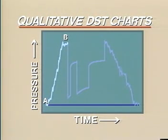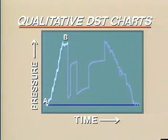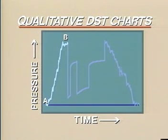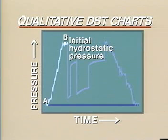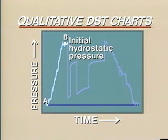After the tools reach the test interval, the surface equipment is connected to the drill pipe. During this time, the hydrostatic pressure stabilizes at point B, pressure surges end, and a value of the initial hydrostatic pressure is recorded at the point where there is a relatively flat pressure value.